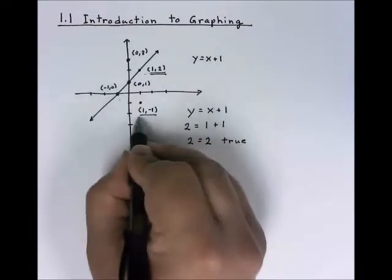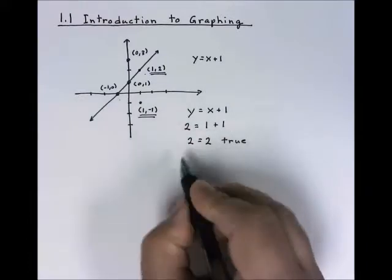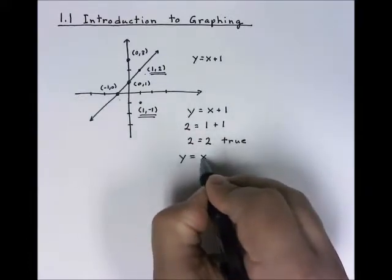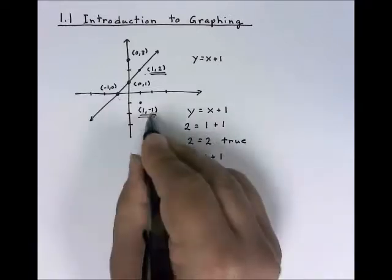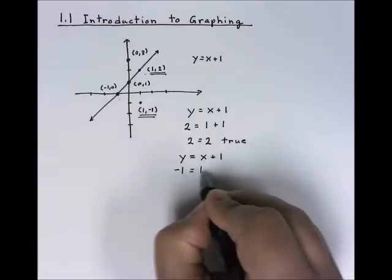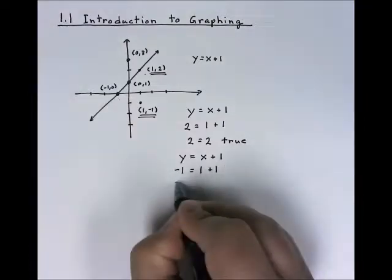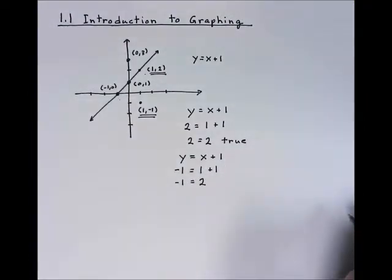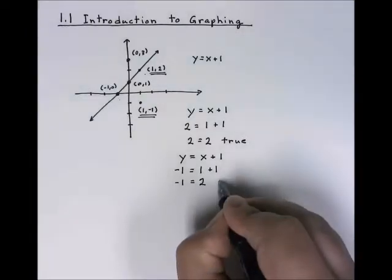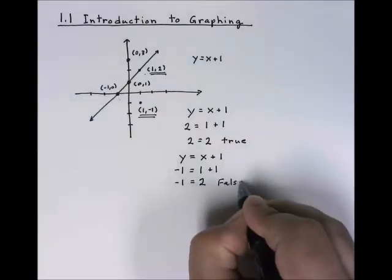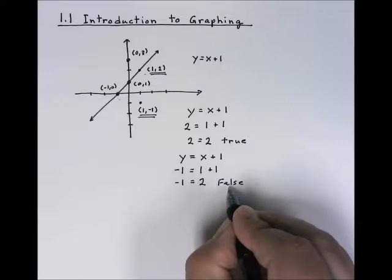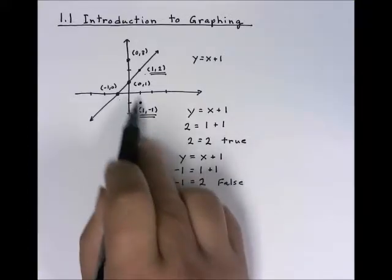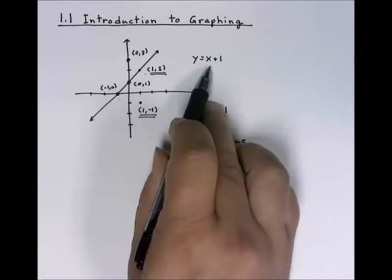Now let's check out the point 1, negative 1. We're going to do it the same way. We're going to start with our original equation. And we're going to plug negative 1 in for the y and 1 in for the x. And when we simplify that, we get negative 1 equals 2, which is a false statement. And if we get a false statement out, it means that the points we plugged in are not on the line and therefore are not a solution to this equation.